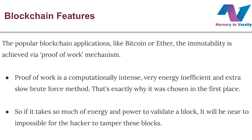Blockchain applications like Bitcoin or Ether — the currency of the Ethereum platform — achieve immutability via a proof of work mechanism. Proof of work comes under the consensus protocol. It is the work done to validate a block or a transaction in a blockchain. Proof of work is a computationally intense, very energy inefficient, and extra slow brute force method.